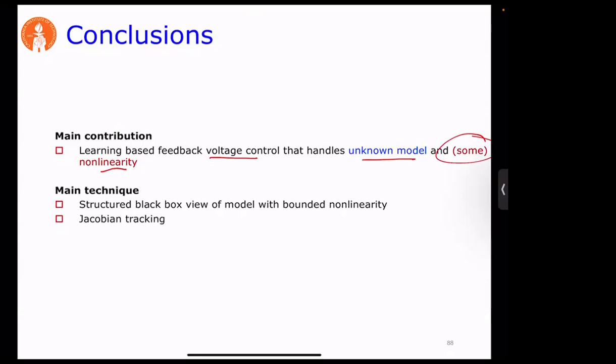So this learning-based feedback voltage control handles unknown models and nonlinearity, subject to Lipschitz conditions on the unknown voltage function and its Jacobian. Thank you so much — a little bit over time. Thank you very much, Steven.